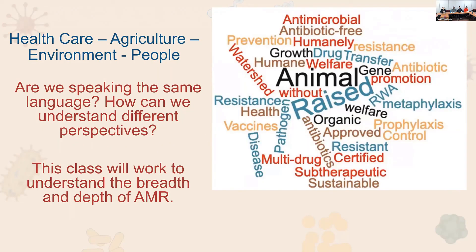The idea is that we have all of these different pillars — healthcare, agriculture — and the goal is to get everyone speaking the same language. During this class, we'll expose you to the breadth of this topic. We'll have people coming in from the healthcare industry, the ag industry, food safety, and wastewater treatment, to expose you to the breadth of knowledge and help you understand that we're all talking about the same thing — antibiotic resistance — but often using different language and having different focuses. The goal is to give you that breadth of knowledge so you can go forward and be more deeply part of it.